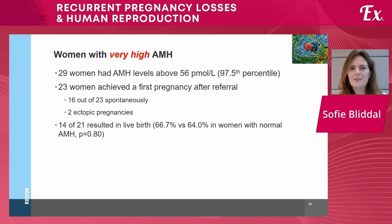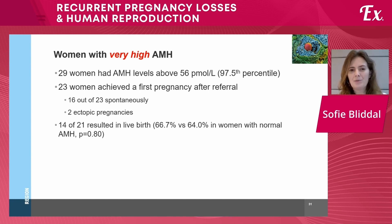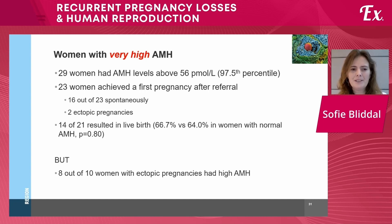Zooming in on women with very high AMH above 56 picomoles per liter — the 97.5th percentile — we had 29 women. Twenty-three achieved a first pregnancy after referral, 16 spontaneously. After excluding two ectopic pregnancies, 14 out of 21 remaining pregnancies resulted in a live birth — a rate of 66.7% compared to 64% in women with normal AMH. So a high AMH was also associated with a very good live birth rate. However, 8 out of 10 women in the entire cohort who had ectopic pregnancies also had high AMH, though whether this relates to fertility treatment or other factors is unknown.